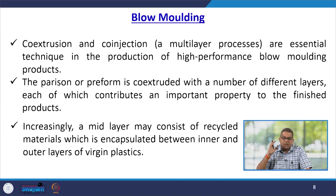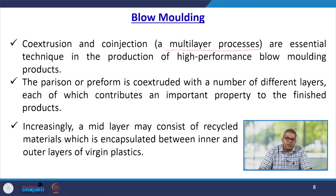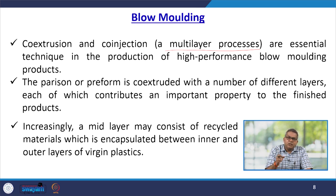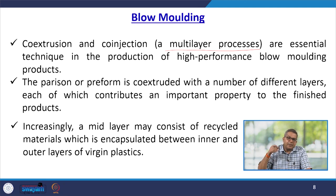Technologies such as co-extrusion and co-injection — sometimes referred to as multi-layer processes — are essential techniques in producing high-performance blow moulded products. The parison or preform is co-extruded with a number of different layers, each contributing an important property to the finished product. A mid-layer may consist of recycled material encapsulated between inner and outer layers of virgin plastic.